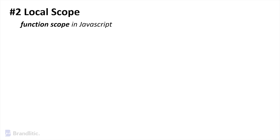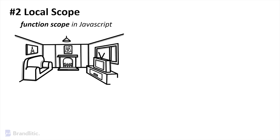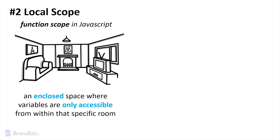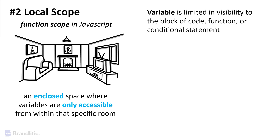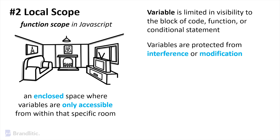Local Scope, also known as Function Scope in JavaScript, is like a private room within a building — an enclosed space where variables are only accessible from within that specific room. When you declare a variable in Local Scope, it is limited in visibility to the block of code, function, or conditional statement in which it is defined. Variables in Local Scope are protected from interference and modification by code outside their scope, thus providing a level of isolation.